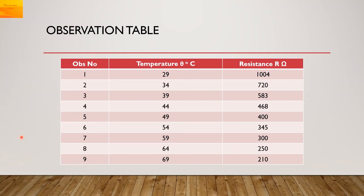We will now see the readings that were taken. The resistance of the thermistor was noted at different temperatures. The first reading was taken at room temperature, 29°C, giving a resistance of 1004 ohms. The heater was switched on and the temperature increased in 5°C intervals — readings taken at 34°, 39°, 44°, and so on till 65°C. The heater was then switched off, and the maximum temperature attained was 69°C, at which the final resistance was noted.